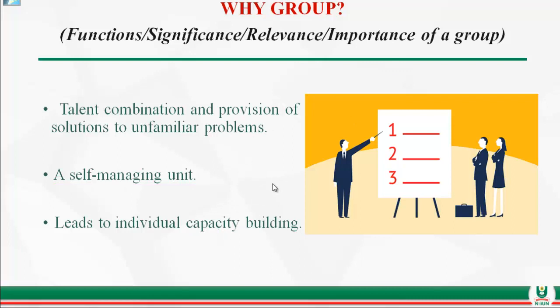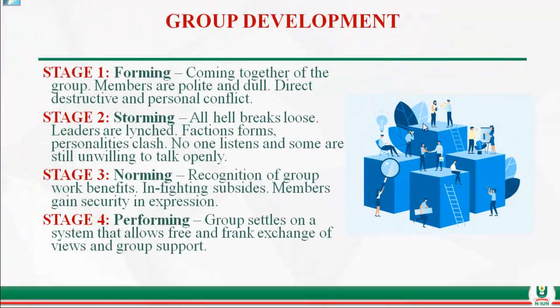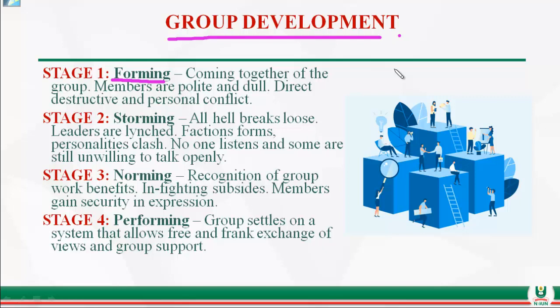Let's look at group development. There are four key stages. The first is the forming stage — the initial stage where the group is about to be formed. Members at this stage tend to be polite and somewhat dull, unsure if the group will work. There can also be personal conflict directed at individuals, which can be destructive.